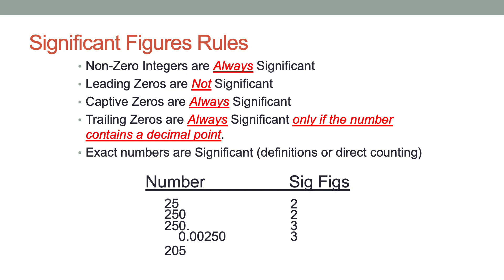A captive zero is one that is sandwiched in between two nonzero integers. For example, 205 has three significant figures.